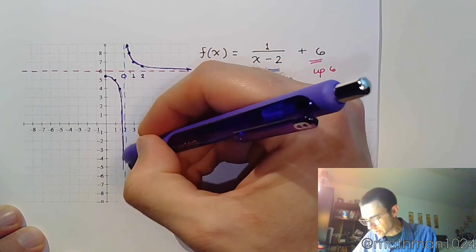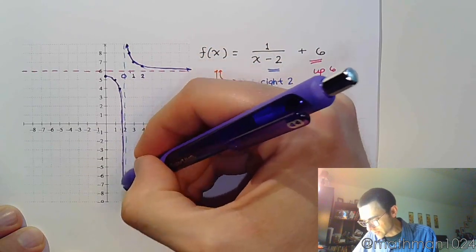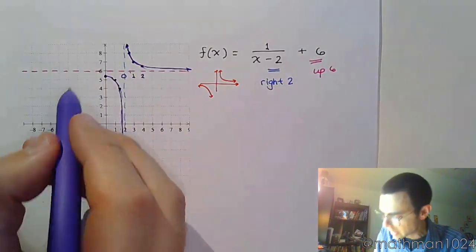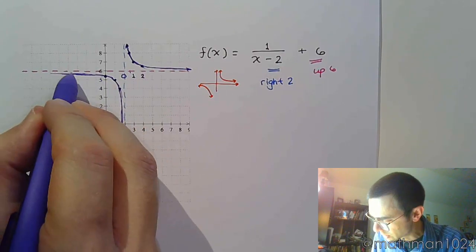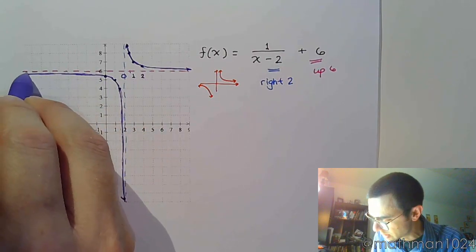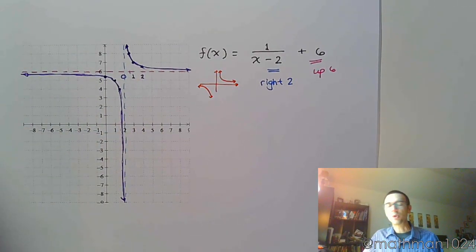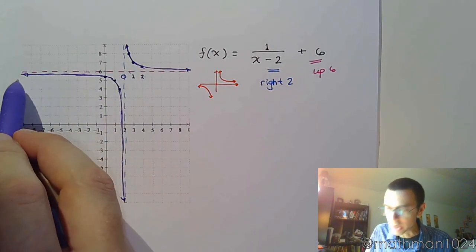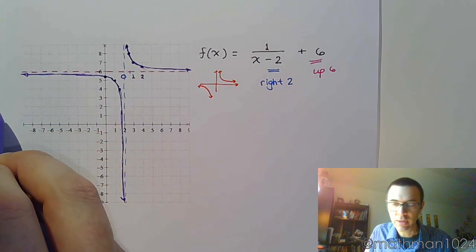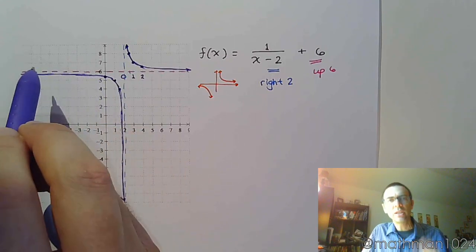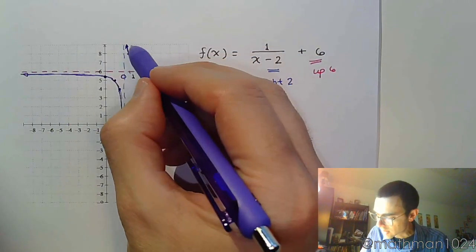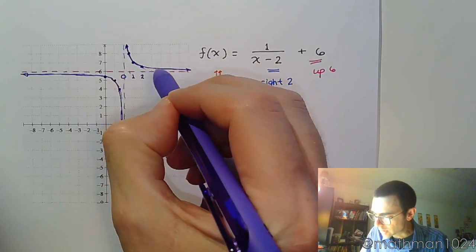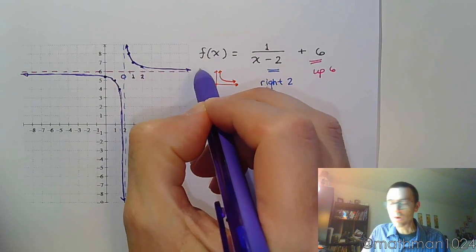The curve gets closer and closer to that vertical asymptote, and coming out to the left it gets closer and closer to that horizontal asymptote. This curve never curves back down — it's getting higher and higher, very slowly. Just like the other branch is getting lower and lower as we go to the right.